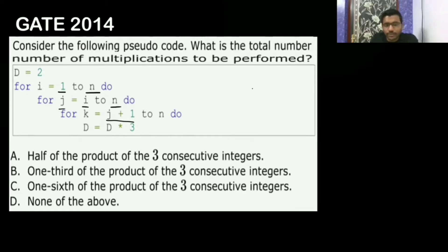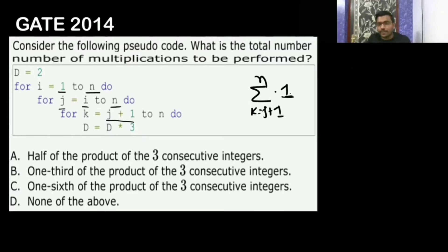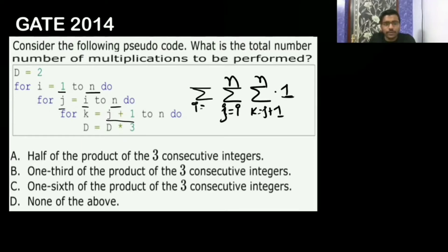In total, how many multiplications is it doing? This loop is running till j+1, when k is j+1 till n, it is doing one multiplication. So whatever number of times it is running, that many total multiplications it is doing. This k-loop will depend on the value of j because it is inside that. So this j-loop is running from i to n, and this outer loop is running when i is equal to 1 to n. If you sum this, you are going to get the total number of multiplications.